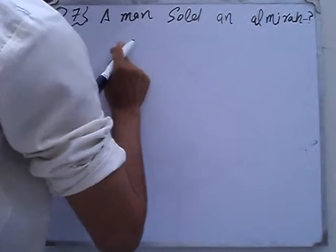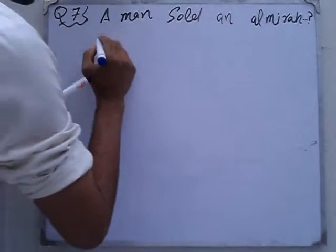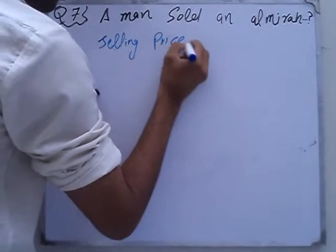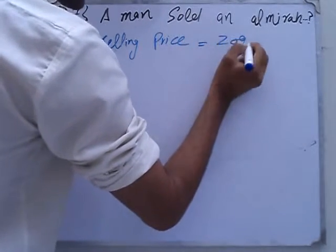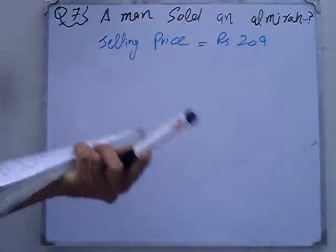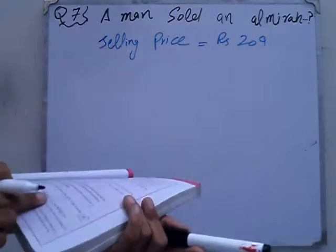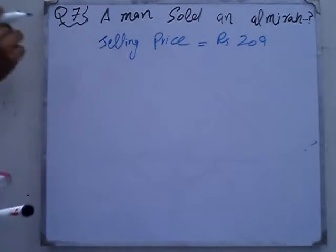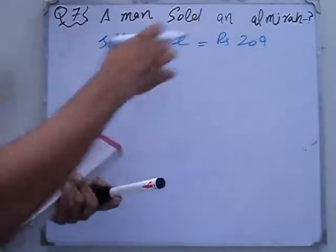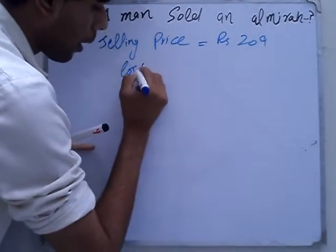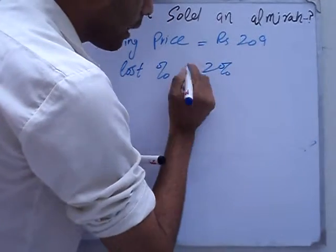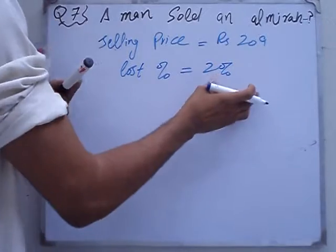Selling price came in as Rs. 209. Which he sold it for Rs. 209 — lost percentage is 2%. So when he sold it for Rs. 209, he would have lost 2 percent.